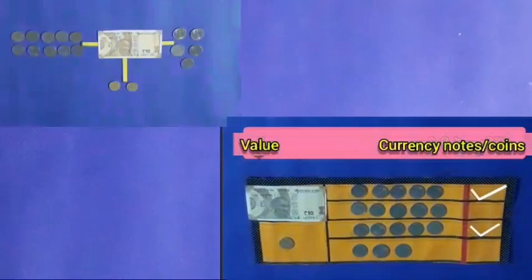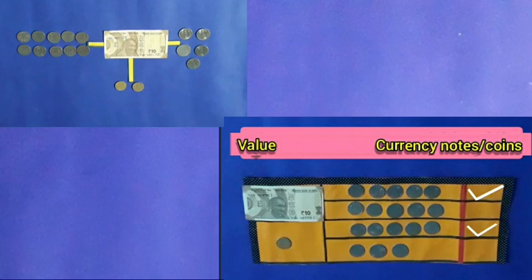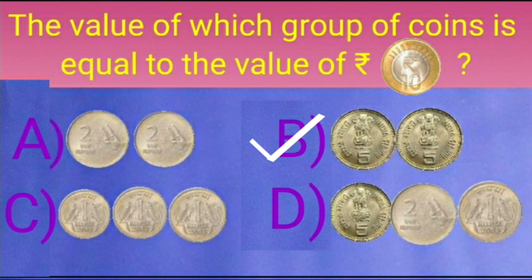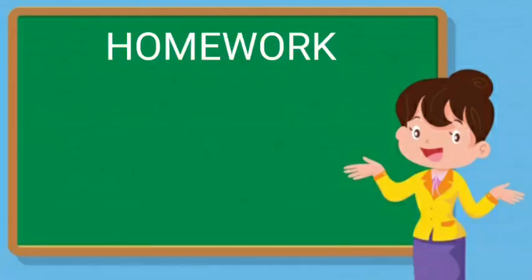Dear kids, today we learned to mark a tick on the right valued group of coins. Today's question is: the value of which group of coins is equal to the value of rupees 10? Look children, there are some coins given below. The right answer is option B. The value of 2 coins of 5 rupees is equal to the value of 1 coin of rupees 10.